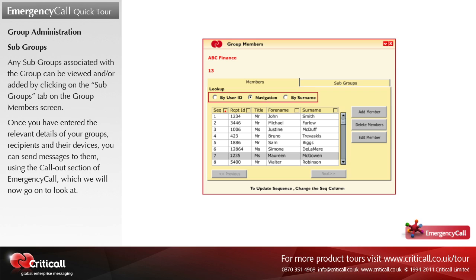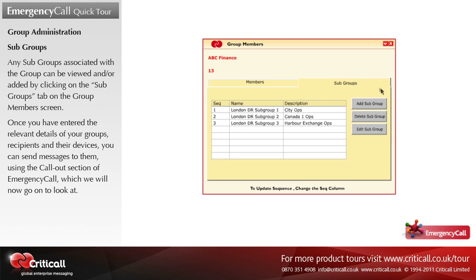Any subgroup associated with the group can be viewed and/or added by clicking on the subgroups tab on the group members screen. Once you have entered the relevant details of your groups, recipients, and their devices, you can send messages to them using the call out section of Emergency Call, which we will now go on to look at.